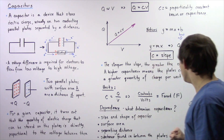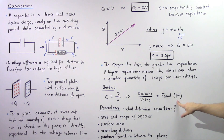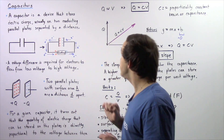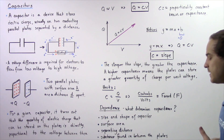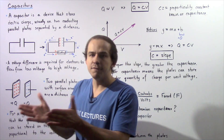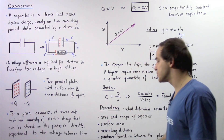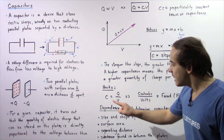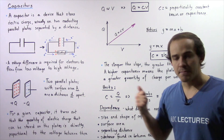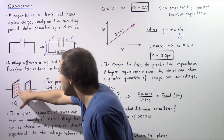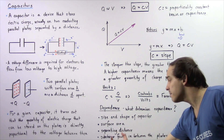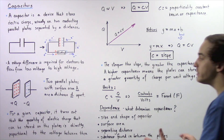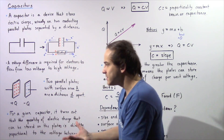Notice that even though Q = CV, capacitance doesn't actually depend on the voltage or the charge. Capacitance depends on other factors we'll discuss in future lectures, including the size and shape of the capacitor, the surface area A of the plates, the separation distance D between the plates, and the substance found between the two plates — which is usually air.